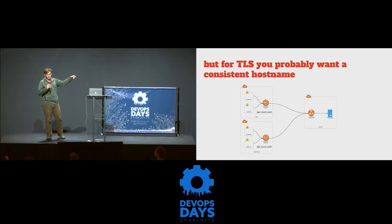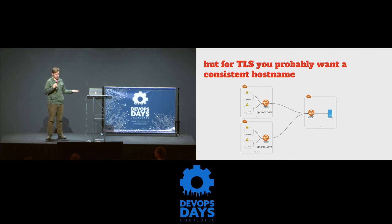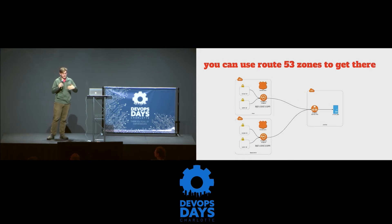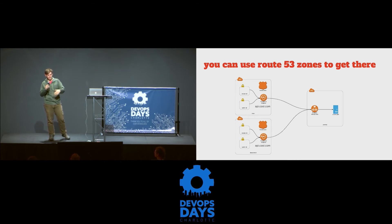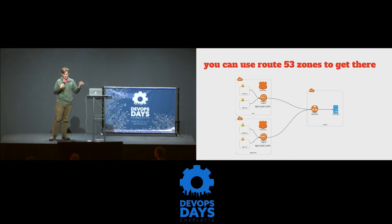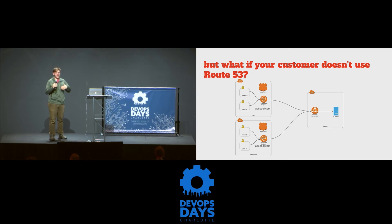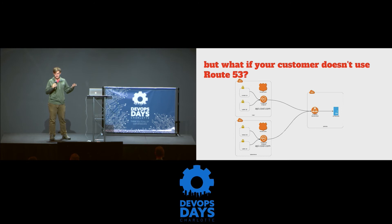This becomes a problem when you have some sort of HTTP API that you want to use TLS over to connect to — you probably want a relatively consistent hostname in that case. What's cool about doing this entirely in AWS is that you can use Route 53 private hosted zones to accomplish this. You make a hosted zone for whatever zone you need this hostname in, and point a CNAME to the domain that PrivateLink gives you. The issue we run into is that not all of our customers use Route 53. Some have Windows DNS, some do other things, some have a combination of the two. So we can't just tell them to go make a conditional forwarder in the amount of time that we need them to.